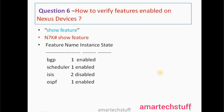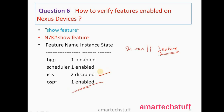Question number six: How to verify features enabled on Nexus switches? This is a very frequently asked question. The simple command is 'show feature'. There is another command: 'show run | include feature', which also tells you what features are enabled or disabled by default. The output looks like this — for example, FIPS is disabled, BGP is enabled, OSPF is enabled. This is how you use 'show feature' to verify enabled features on Nexus switches.